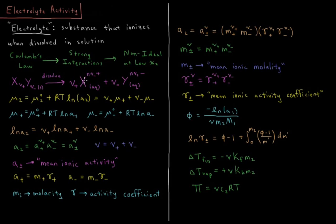The charge of the cation is going to be ν− times some integer, and the charge of the anion is ν+ minus times some integer, such that the total charge of the ion pair is zero when associated. They associate when out of solution and dissociate when in solution.